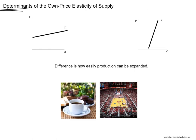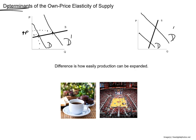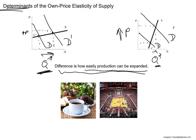What determines the own price elasticity of supply? Assume two different markets both experience an increase in demand. On the left with a flat supply curve, prices barely nudge up but the quantity producers bring to market increases a lot. On the right with a steeper supply curve, demand goes up, prices rise a whole lot, and producers are barely able to bring additional units to market. That's really the difference between elastic and inelastic supply: how easily producers can expand their production.